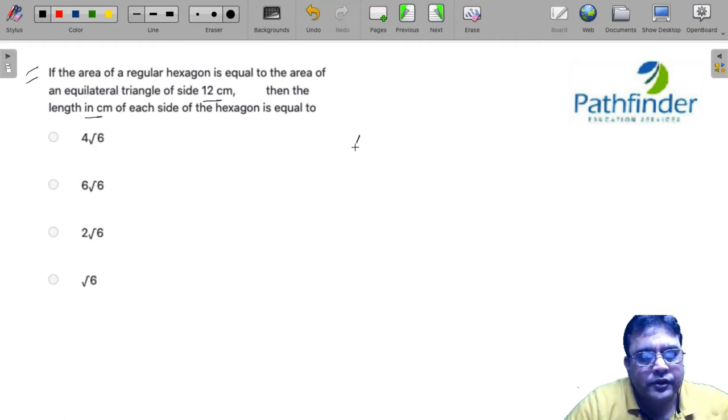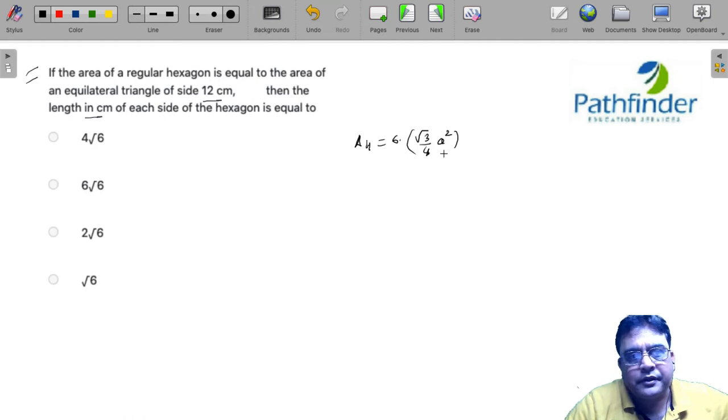Area of a regular hexagon is equal to six times the area of an equilateral triangle of side A, where A is the side of the regular hexagon.